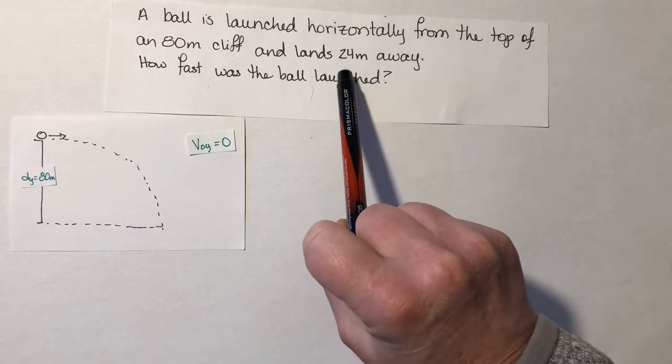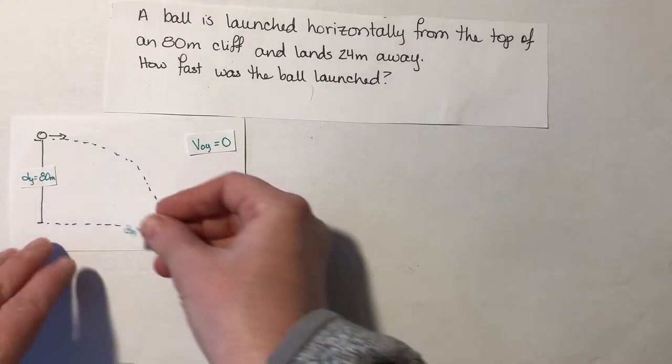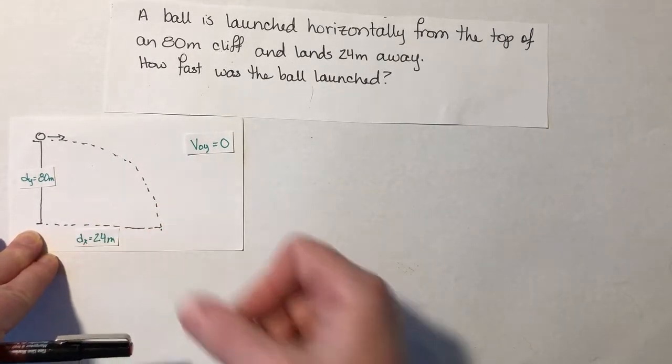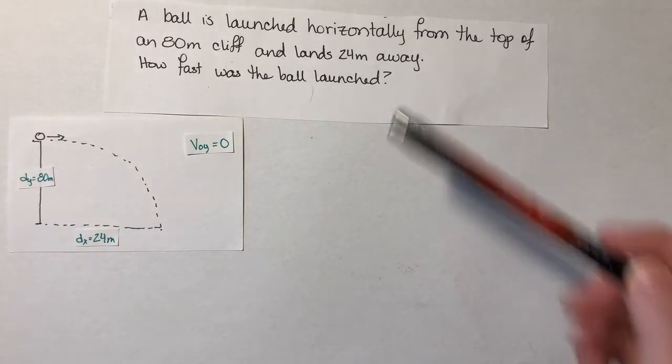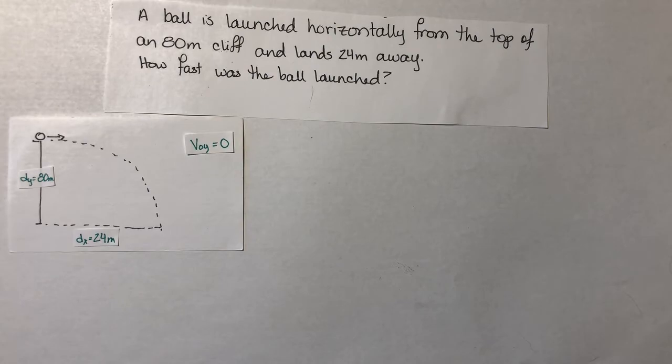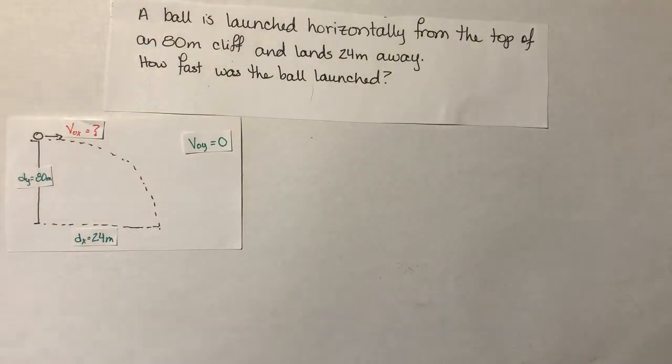It lands 24 meters away. So I might say it lands 24 meters away from the bottom of the cliff but it means the same thing, that this is dx or distance in the x direction is 24 meters. And the question says how fast was the ball launched? So that tells me what I'm looking for is v0 in the x direction. That's my question mark.